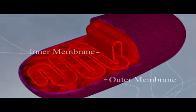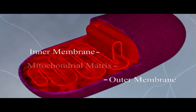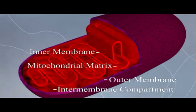Mitochondria have two membranes producing two compartments: an inner compartment enclosed by the inner membrane and containing the mitochondrial matrix, and an intermembrane compartment between the inner and outer membranes.